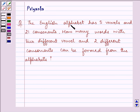The question says, the English alphabet has 5 vowels and 21 consonants. How many words with 2 different vowels and 2 different consonants can be formed from the alphabets?